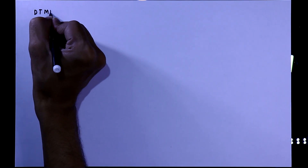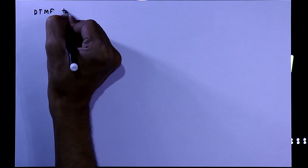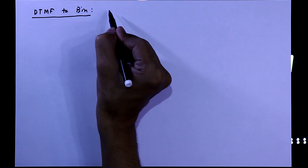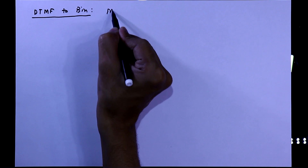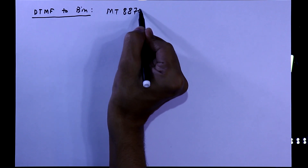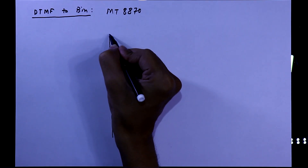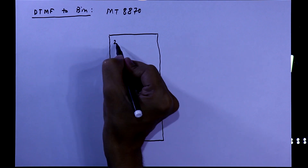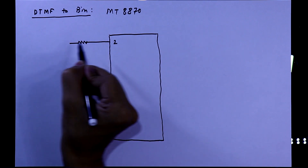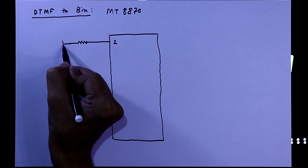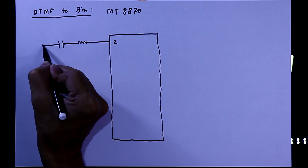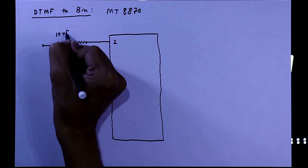We need an IC DTMF to binary code converter — it is the MT8870. Here is the IC with the pin numbers. With pin number 2, we have to connect a 100kΩ resistor and a 10nF capacitor.